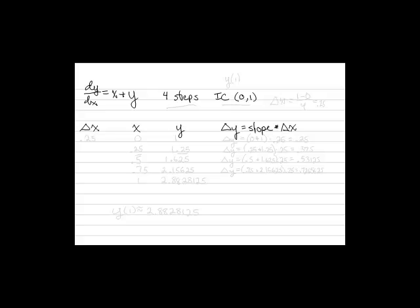We're going to perform Euler's method on the differential equation x plus y. We're going to do four steps with an initial condition of (0, 1), and we will approximate y of 1.